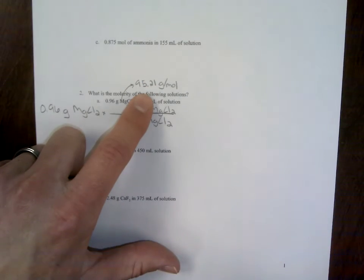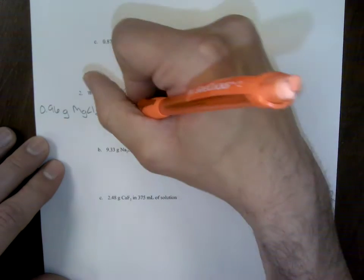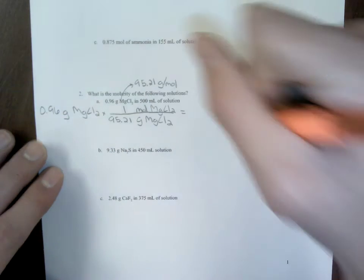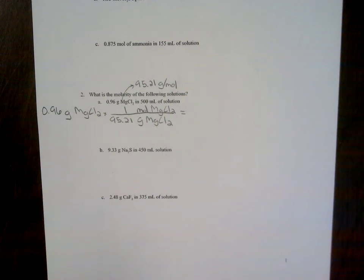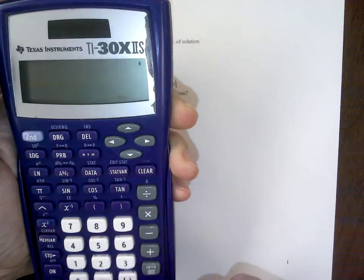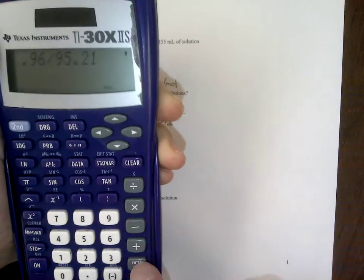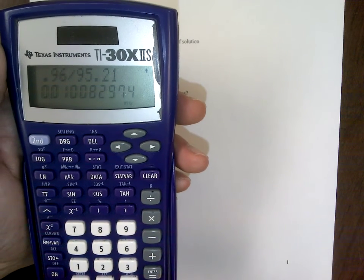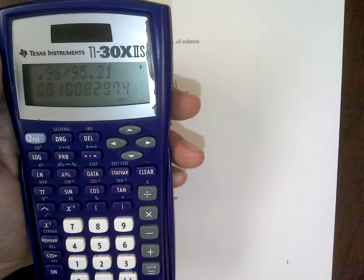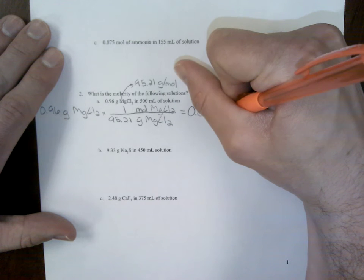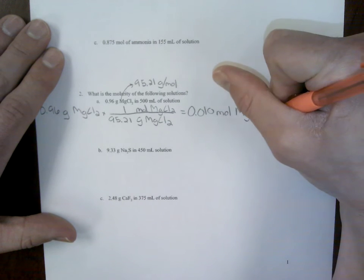Gram over mole or mole over gram, we need the molar mass. You could utilize the periodic table. I went ahead and looked this up, and the molar mass of magnesium chloride is 95.21 grams per mole. So the 95 number is associated with grams, so in this case here, it is going to go on bottom. So we have 95.21 grams per one mole. What we do here is just take 0.96 grams divided by 95.21. So I'm going to take 0.96 divided by 95.21.